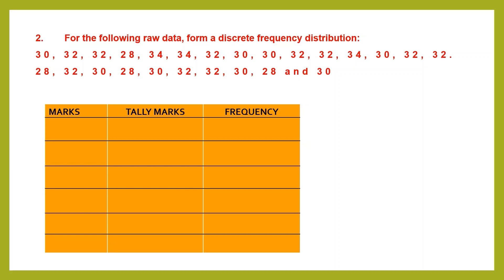In the second step, in the first column you write all the marks from the lowest to the highest. Let's look for the lowest: we have 30, 32, 28. Let's see if anything is smaller than 28. In the second row we have 28 again, and one more 28. So 28 is the smallest. We begin by writing 28, then 30, then 32 — they are going up in twos — then 34. We don't have anything greater than 34. If numbers are repeated, you don't repeat them in the marks column; that is why we have tally marks.